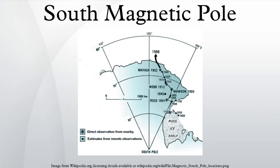For historical reasons, the end of a magnet that points north is itself called the north pole of the magnet, and the other end, pointing south, is called the magnet's south pole. Because opposite poles attract, the Earth's south magnetic pole is physically actually a magnetic north pole.